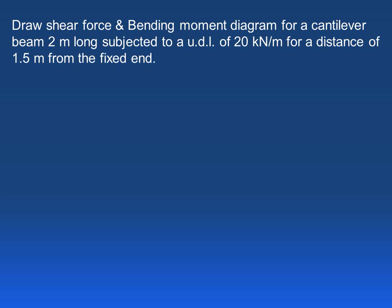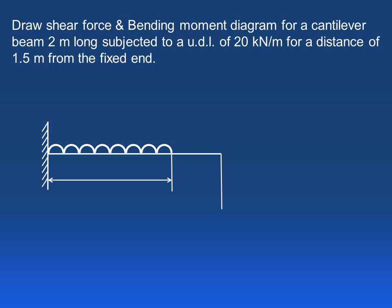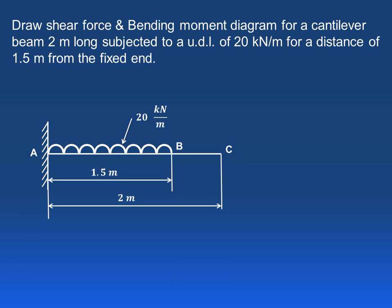In this video we will try to understand how to draw shear force and bending moment diagram in case of a cantilever beam. In this particular case, we have a cantilever beam of 2 meters long, subjected to a uniformly distributed load of 20 kilonewton per meter for a distance of 1.5 meters from the fixed end. Let us draw the arrangement: this is the fixed end, with a UDL acting for 1.5 meters, and total span length is 2 meters.